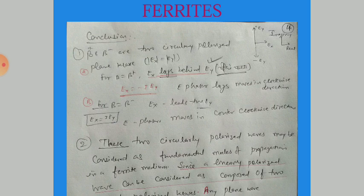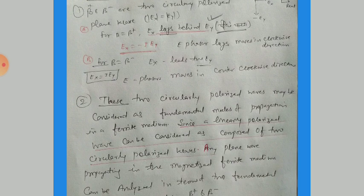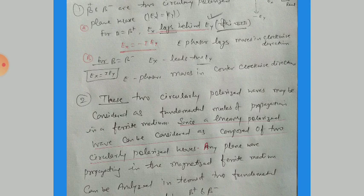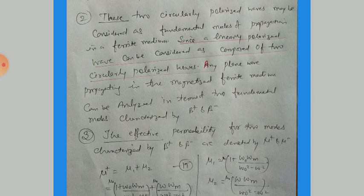First conclusion: β₊ and β₋ represent two circularly polarized plane waves with |Ex| = |Ey|. Second conclusion: these two circularly polarized waves may be considered the fundamental modes of propagation in the Ferrite medium, since a linearly polarized wave can be decomposed into two circularly polarized waves — as in optics, a plane wave is a combination of two reverse circularly polarized waves. Any plane wave propagating in a magnetized Ferrite medium can be analyzed in terms of β₊ and β₋.